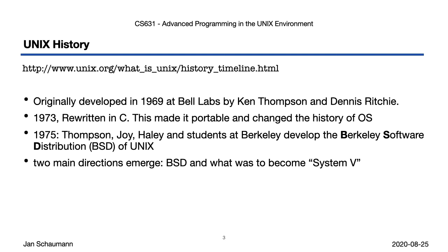Graduate students Chuck Haley and Bill Joy, who in 1982 would go on to co-found Sun Microsystems, added new tools and other software and eventually began distributing these as the Berkeley Software Distribution, or BSD. During that time, two main lineages of Unix developed: the BSD-derived or influenced systems, as well as those deriving from what became System V of Unix, one of the first commercial versions of the OS.